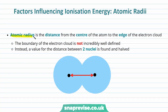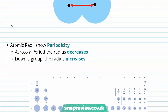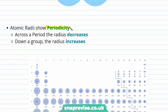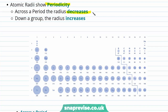The atomic radius is the distance from the centre of the atom to the edge of the electron cloud. The boundary of our electron cloud is not incredibly well defined — instead, we take a value for the distance between two nuclei and halve it. Here I've drawn two atoms with their electron clouds; we find the distance between the two nuclei and halve it to give us a value for the atomic radius. Atomic radii show periodicity: across a period the atomic radius decreases, and down a group the radius increases, as we can see on this periodic table.